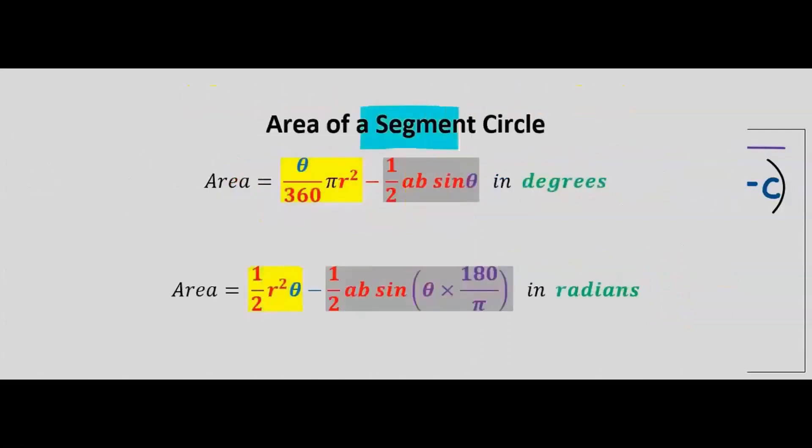To find the area of a segment, we are going to use this formula when the central angle is in degrees, and this formula when the central angle is in radians.